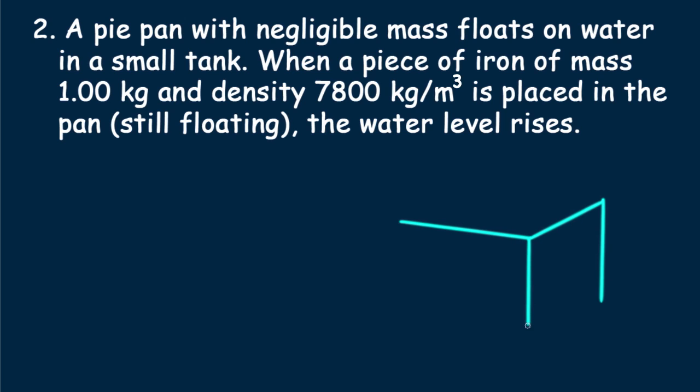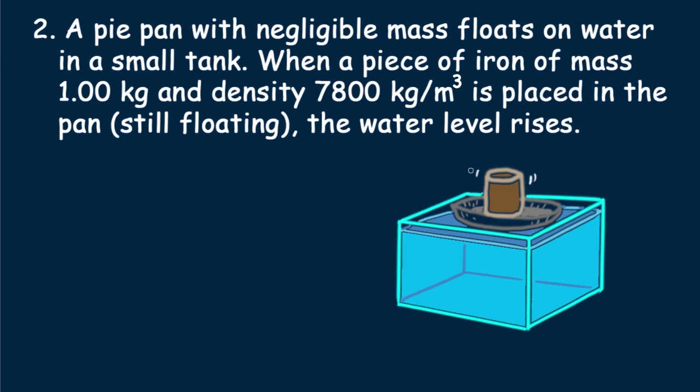Let's try this problem. Number two. A pie pan with negligible mass floats on water in a small tank. When a piece of iron of mass 1 kilogram and density 7,800 kilograms per meter cubed is placed in the pan, still floating, the water level rises.